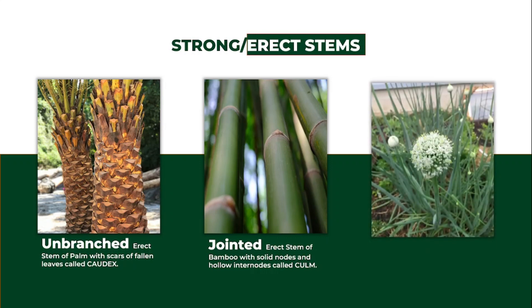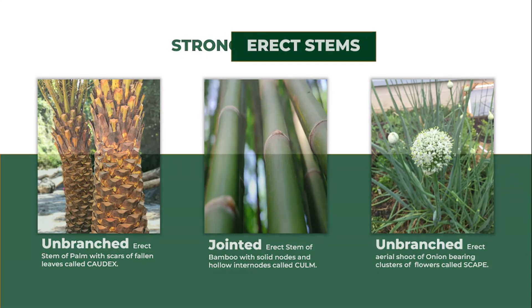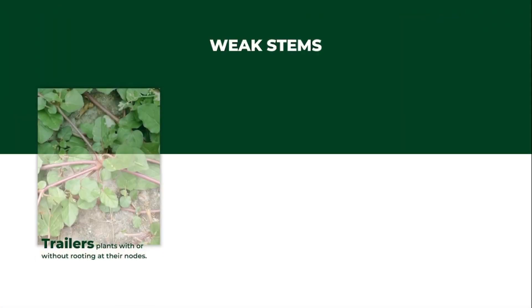Lastly, under strong stems, we have the unbranched erect shoots of onions, which is characterized by clusters of flowerings. Moving on, let's talk about the weak stems. The weak stems comprise different varieties as well.